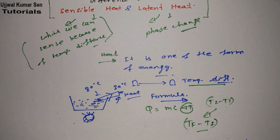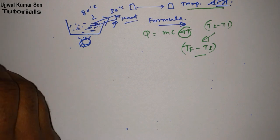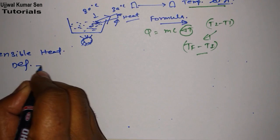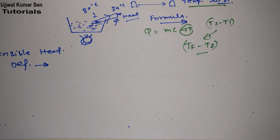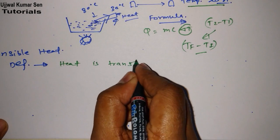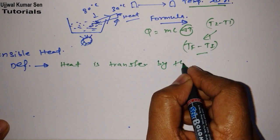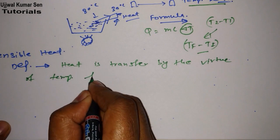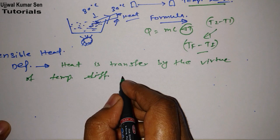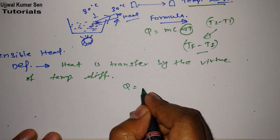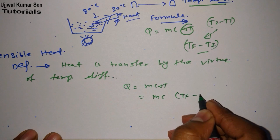Now let's go for the concept of sensible heat and latent heat. First, the definition of sensible heat: sensible heat is heat that is transferred by virtue of temperature difference. The expression is Q equals mc delta T, or mc times (T-final minus T-initial), to avoid confusion between T1 and T2.